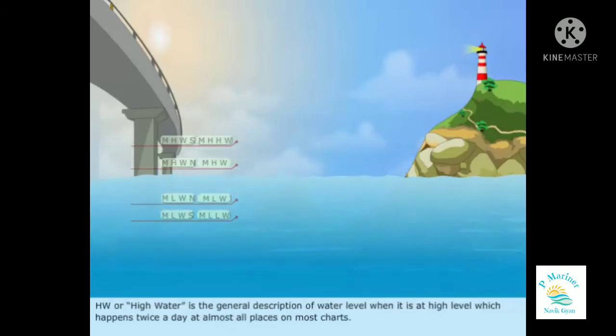HW, or high water, is the general description of water level when it is at high level, which happens twice a day, at almost all places, on most charts.